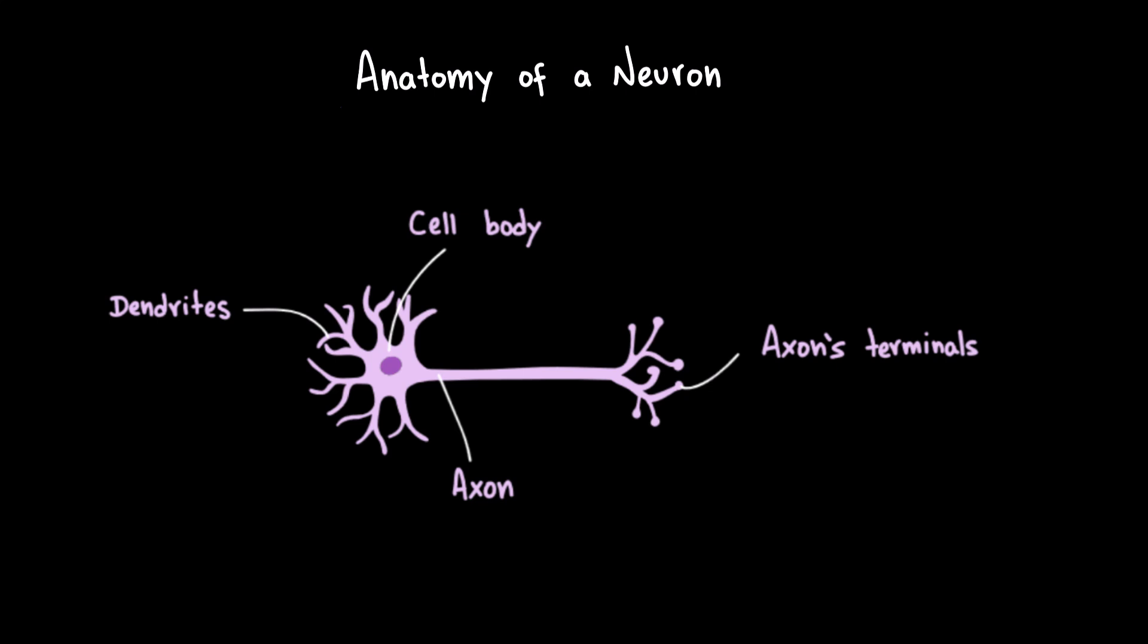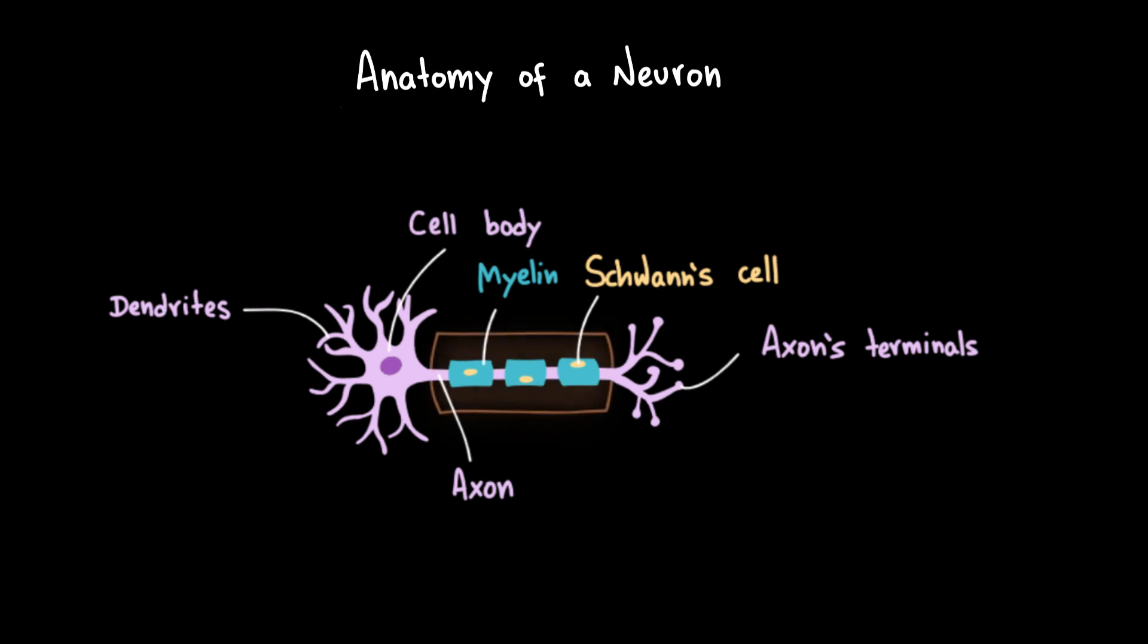In the peripheral nervous system, many axons are wrapped in myelin, which is produced by Schwann cells. Myelin acts like insulation on a wire, allowing electrical signals to travel much faster and more efficiently along the axon. And surrounding each individual axon, whether myelinated or not, there is a delicate layer of connective tissue called the endoneurium, which provides support and protection.